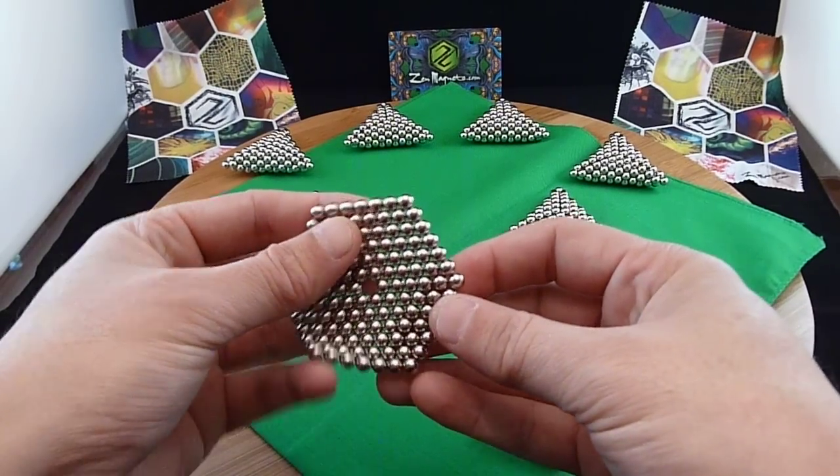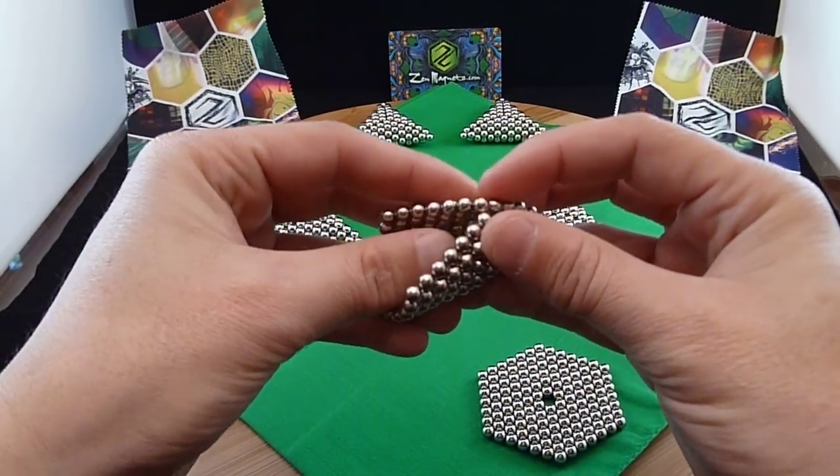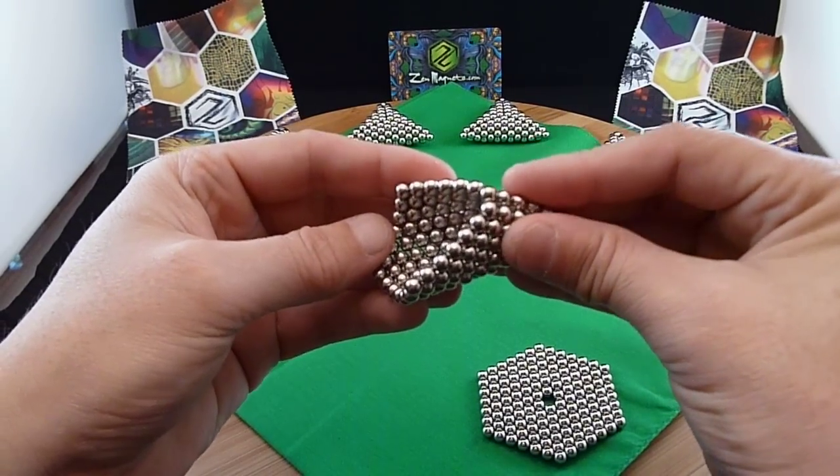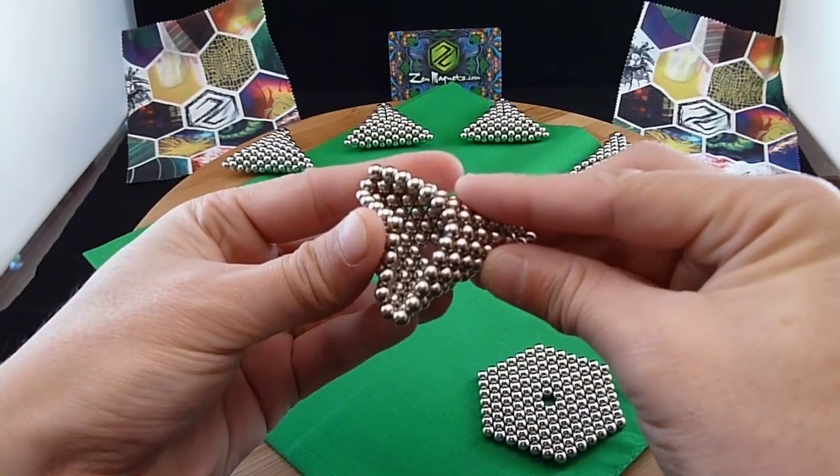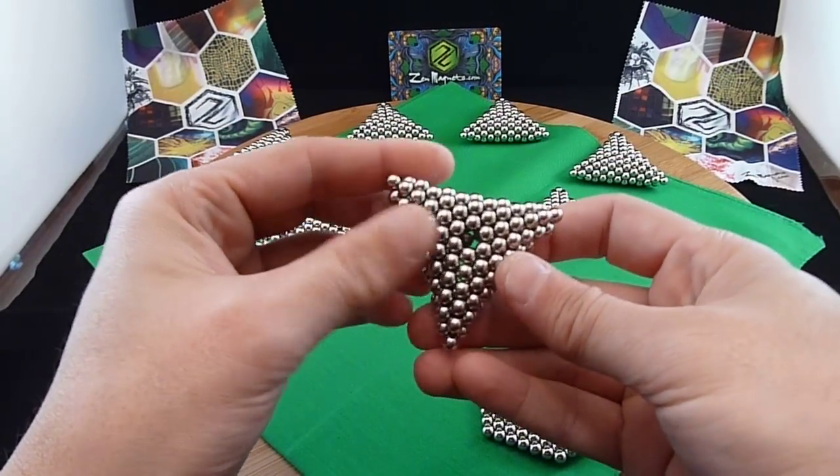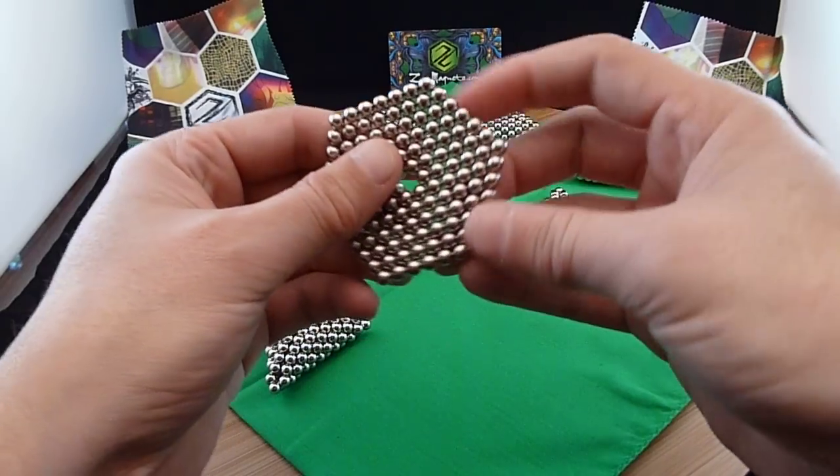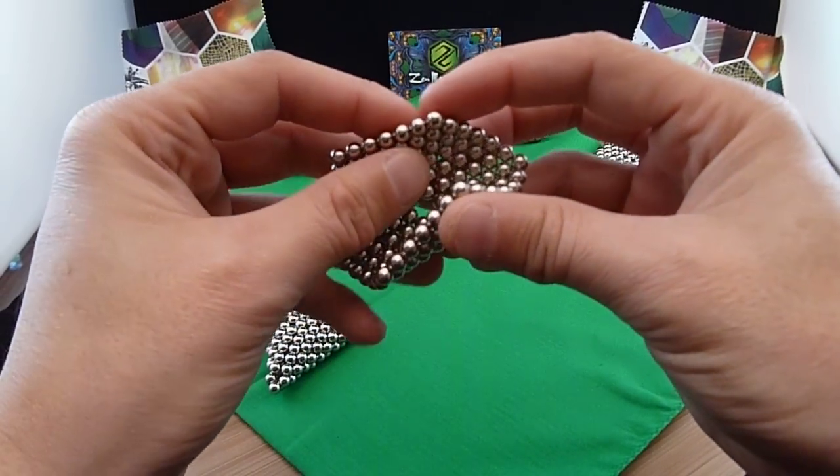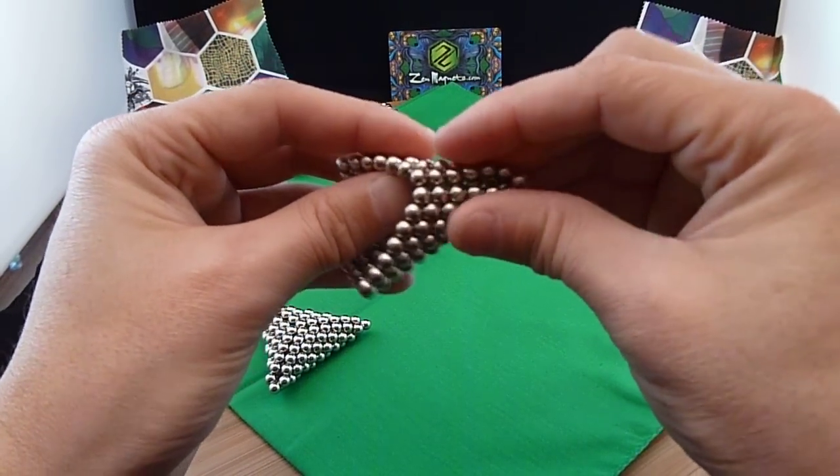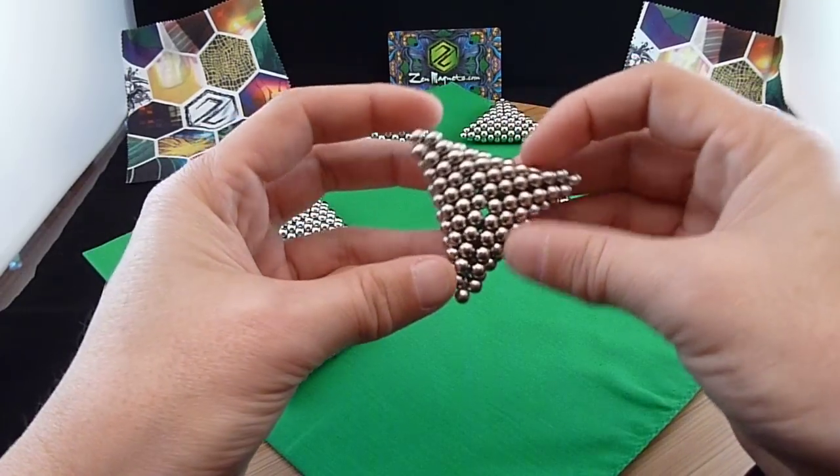So what you're going to do is take these two points and bring them together, close that off, and then push this into the middle to make this triangle. It's got a hole on one side there. So once again, you take the hexagon, push two of the points together, close that off, push into the middle, and boom, there you go.